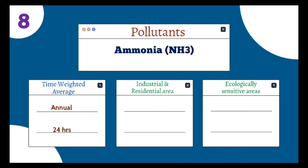The eighth pollutant is ammonia (NH₃), and its unit is micrograms per meter cube. In residential and industrial areas, the annual value should not exceed 100 µg/m³, and the 24-hour value should not exceed 400 µg/m³. In ecologically sensitive areas, the annual value should not exceed 100 µg/m³, and the 24-hour value should not exceed 400 µg/m³.